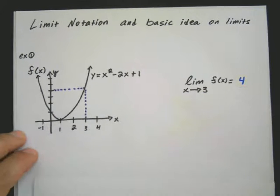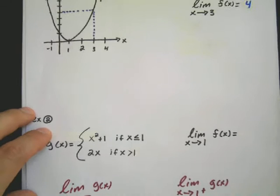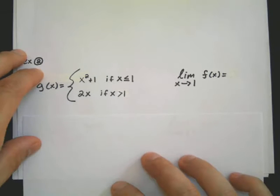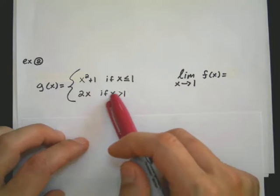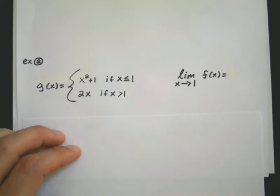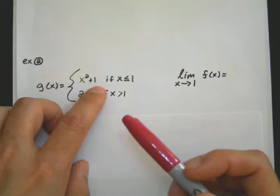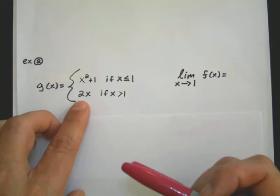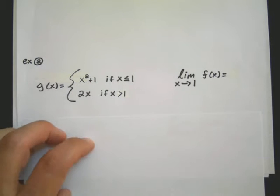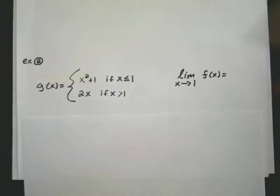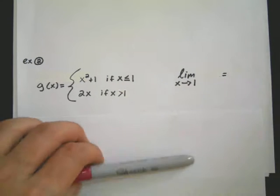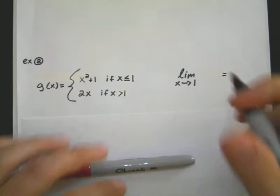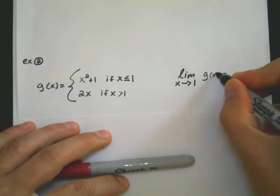The next example we're going to be looking at is a piecewise function. So we have g of x, which is a piecewise and it's split over at 1. It's going to be x squared plus 1. This one over here is 2x. And I want to figure out what the limit is as I approach 1. This should not say f of x, let's just say g of x.